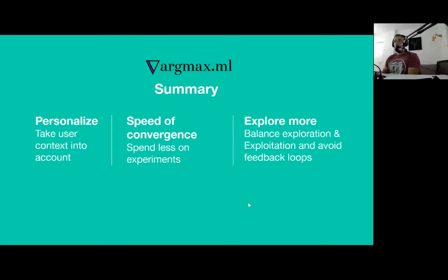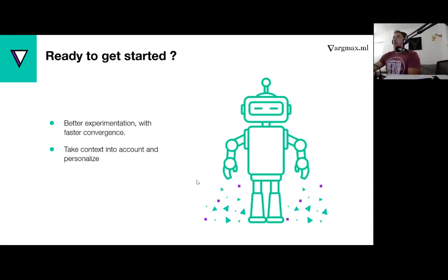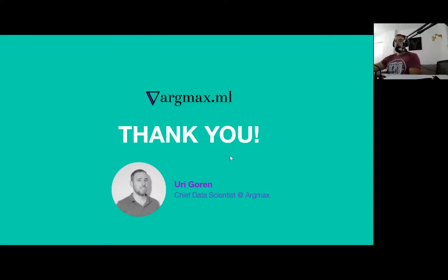That brings us to the end of our talk. Just to summarize, multi-armed bandit and contextual bandits are a great way to personalize your website. You can take the context into account. It makes convergence faster. It also solves the exploration-exploitation problem because it takes into account exploration and helps us avoid feedback loops. If you're interested in learning more about contextual bandits, smart experimentation frameworks, and other things that are faster and more personal than A-B testing, please do contact us at argmax.ml. Thank you. If there are any questions, now would be a great time.